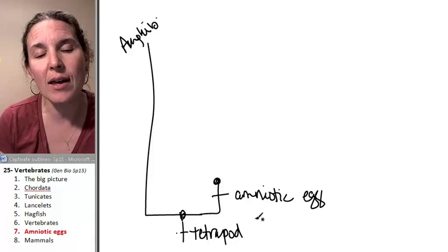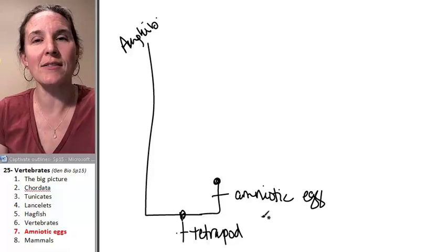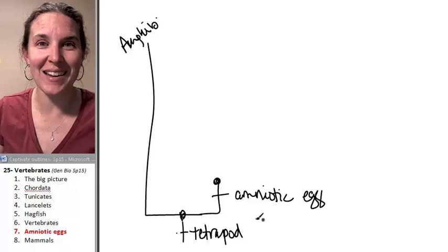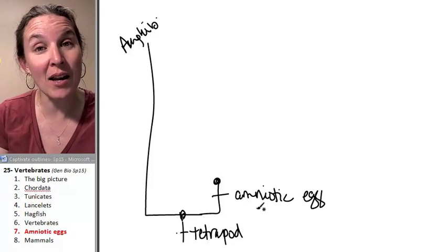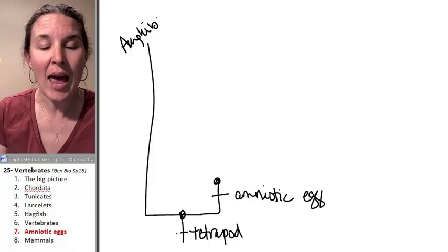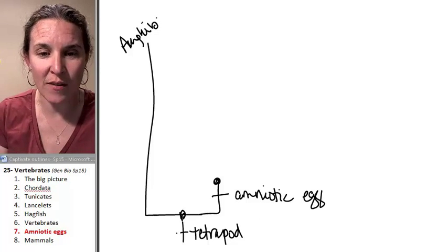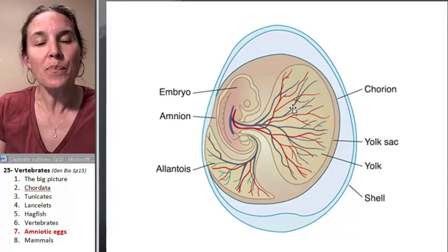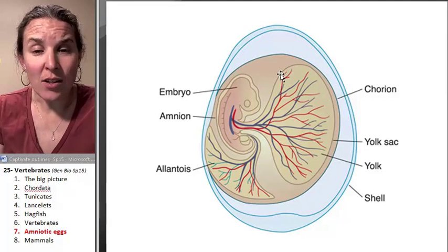Someone along the line developed, mutated into having an amniotic egg. And I just need to show you a picture of this amniotic egg. It's a chicken egg. That's all.